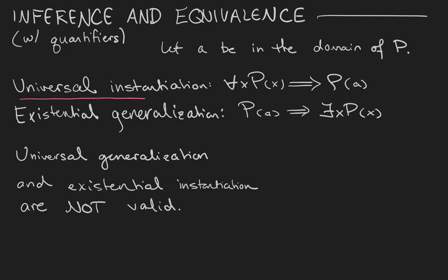Universal instantiation is the rule that says if we know that a predicate P is true for every x in its domain, then it's true for a particular member of that domain.